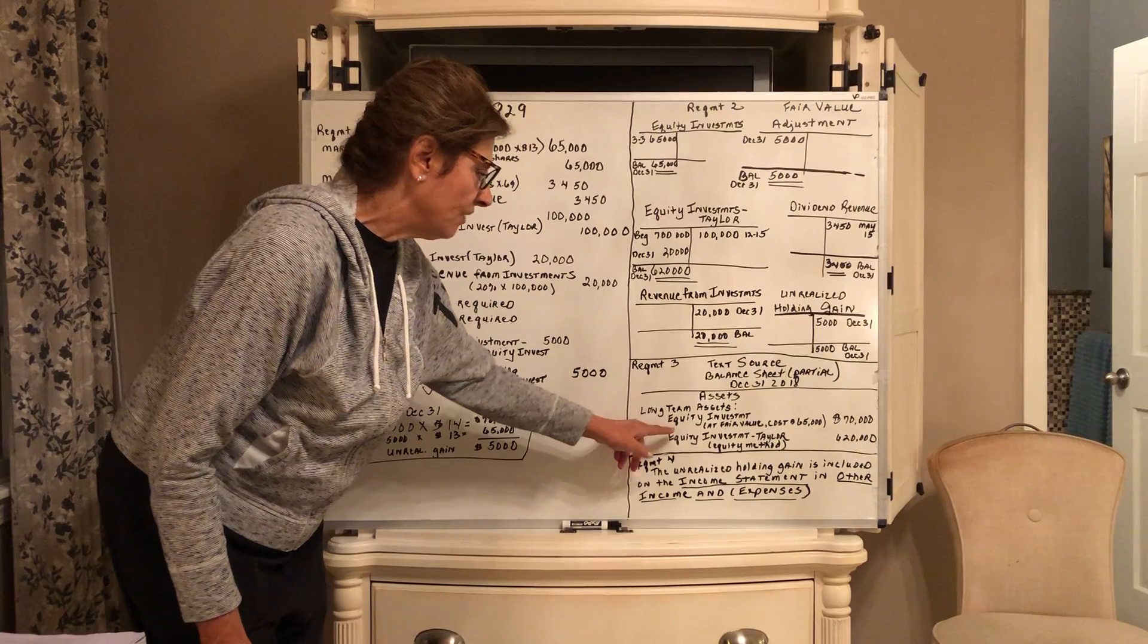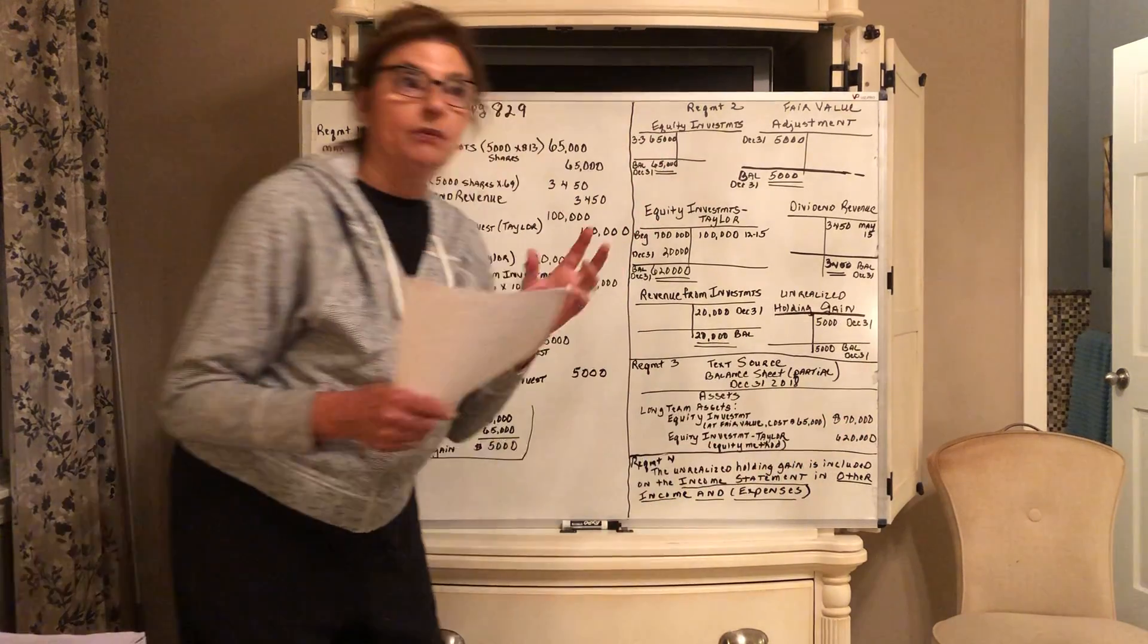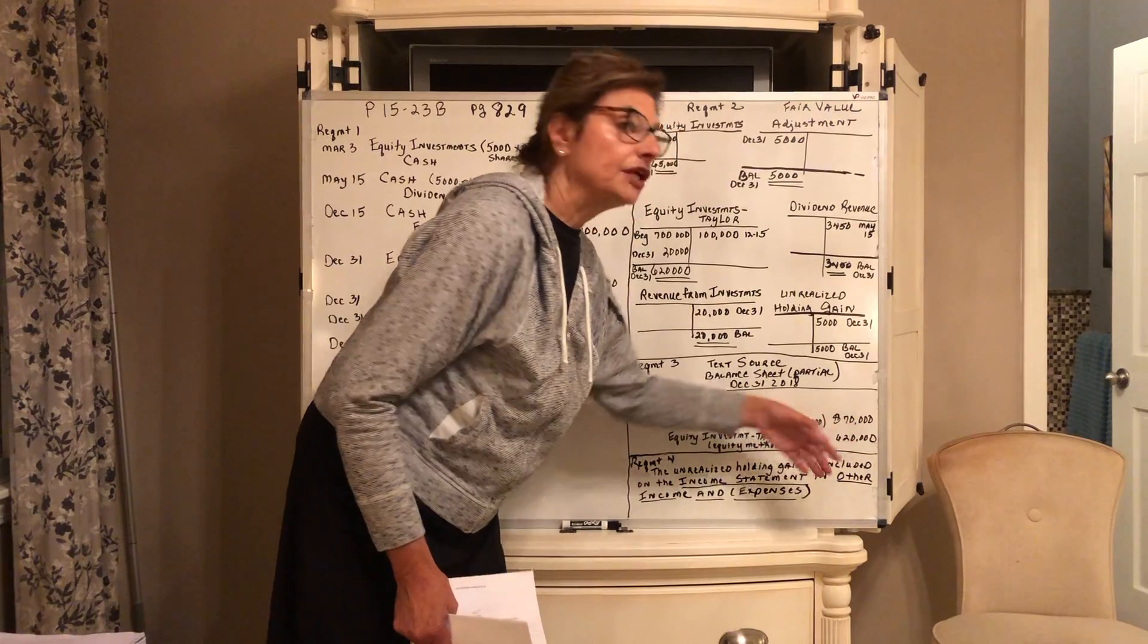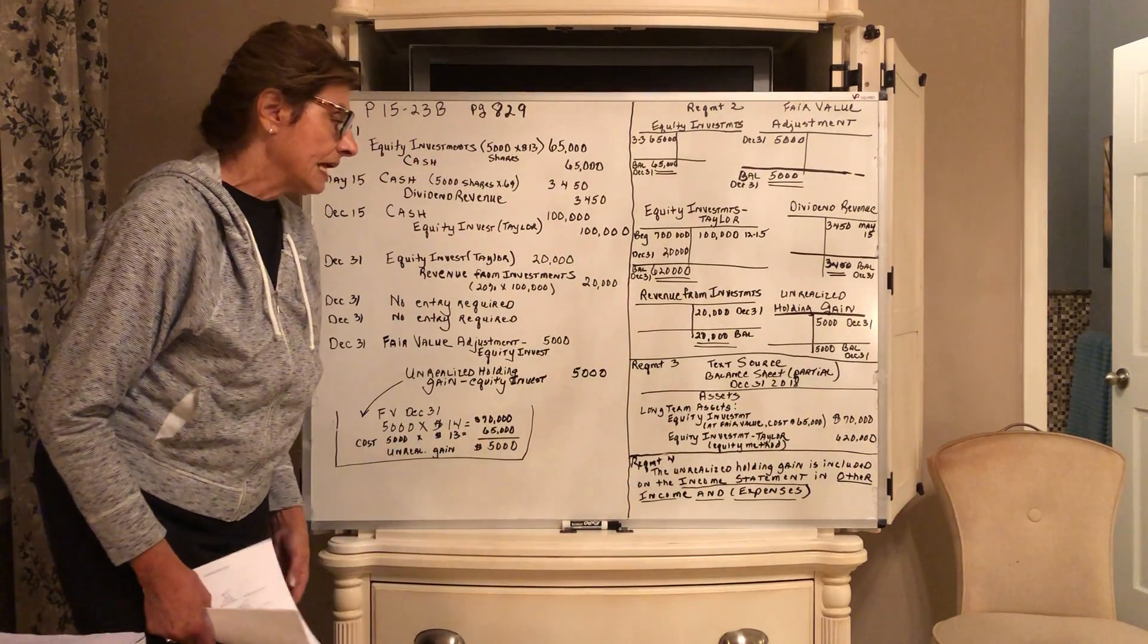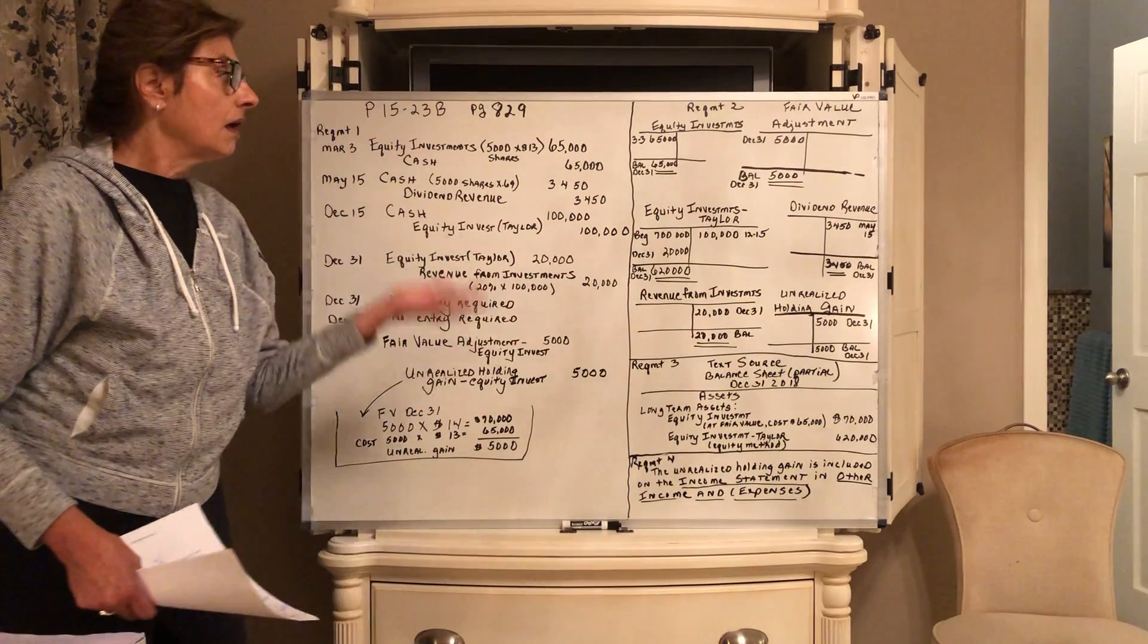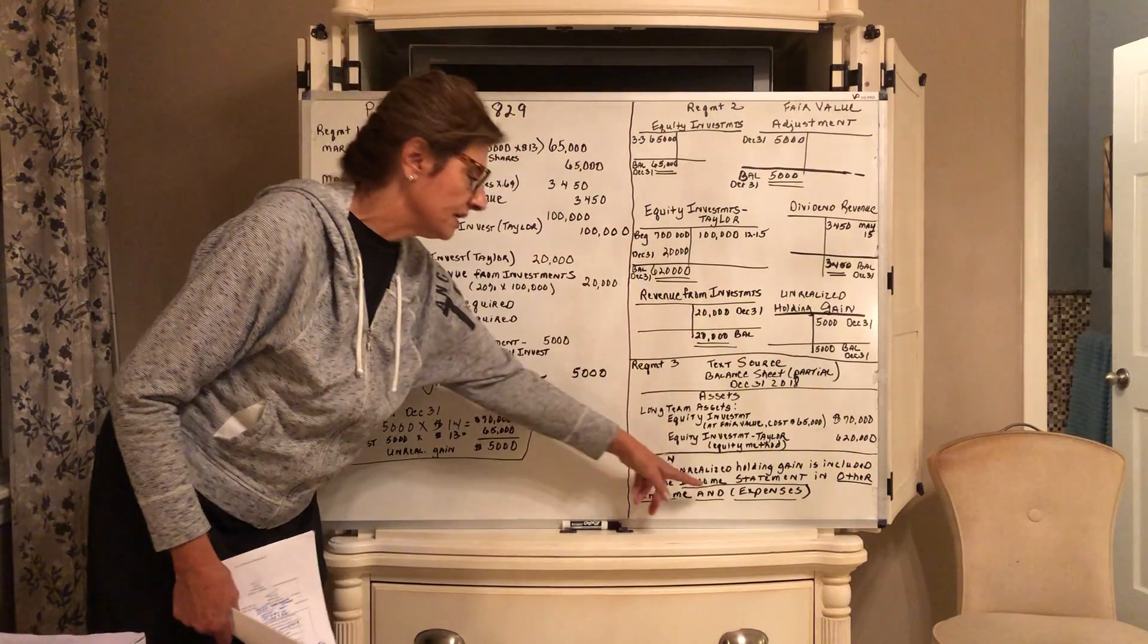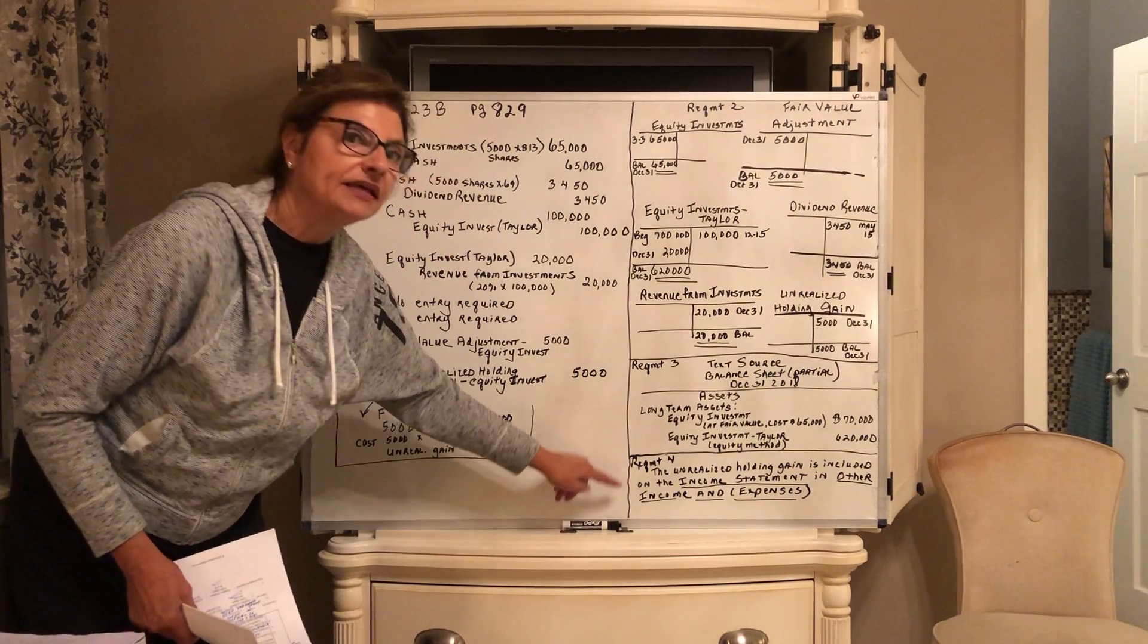That's the reason why I put all the balances, so it would be real easy. This is the partial balance sheet at the end of the year 2018 for them. In the assets, the equity investment at fair value—notice how the figure that you put in to be totaled, we don't have a total here because we don't have all their other assets, but the number that you would total would be the fair value, but the cost is in there too in parentheses. Then the equity investment in Taylor, which changed from $700,000—it went up by $20,000 but down by $100,000 from the dividends we received—is now at $620,000.